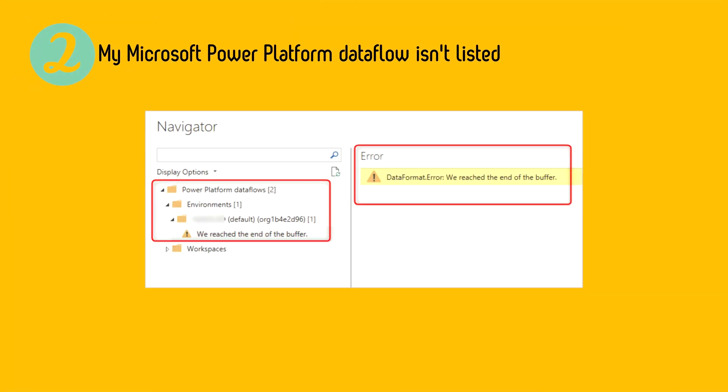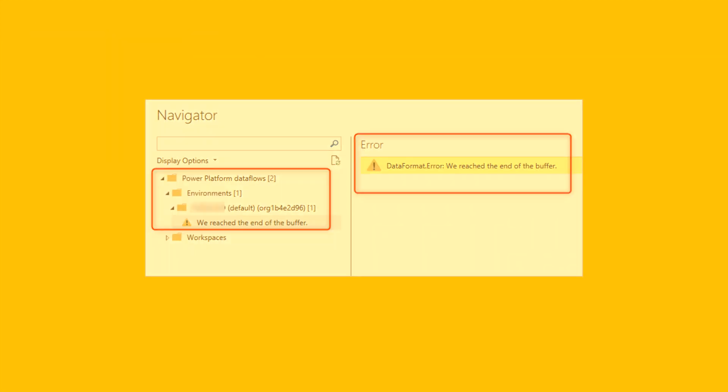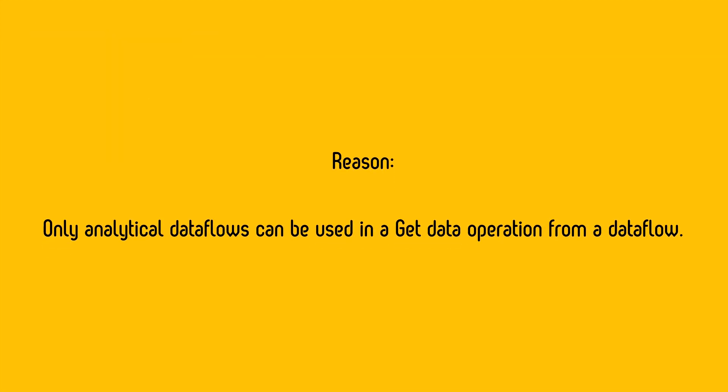Next: your Microsoft Power Platform data flow isn't listed. Sometimes you have a Power Platform data flow that you created and refreshed, but you still can't access it through the Get Data command. This might be because the account trying to access the data flow doesn't have access. However, even if the account does have access, another reason might be the type of data flow you are trying to access — you might receive errors like 'We reached the end of the buffer' or a data format error.